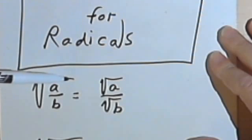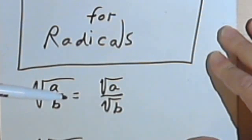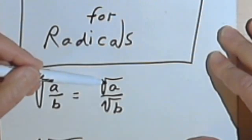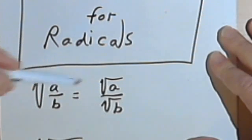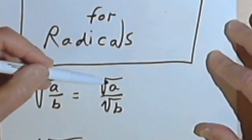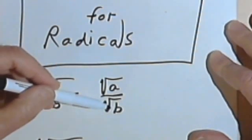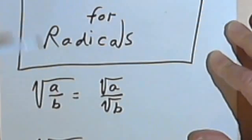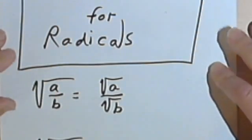What the quotient rule says is this. If we have a root, let's say a square root, and we have a fraction underneath, so we have the square root of a over b, we can break that down into two fractions, each one with a radical. In other words, the square root of a over b equals the square root of a over the square root of b. And of course we can go in the other direction as well. So let's look at some places where you could use it.